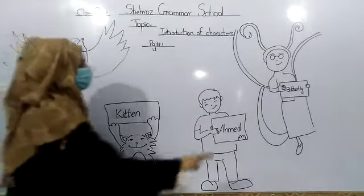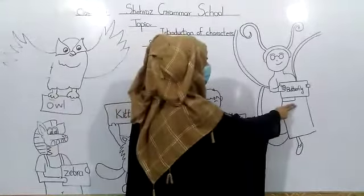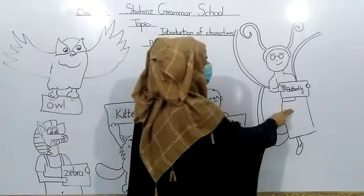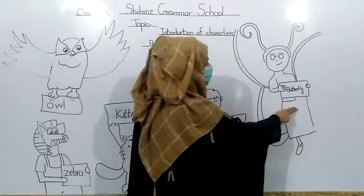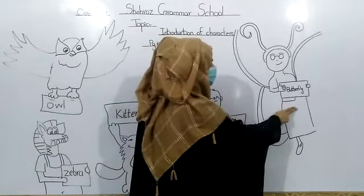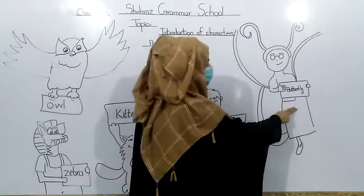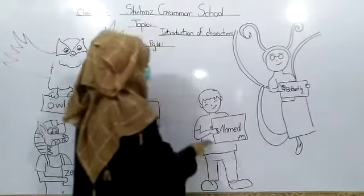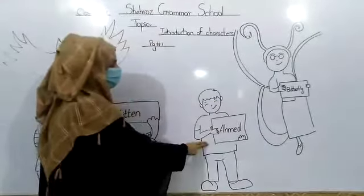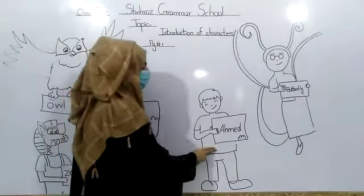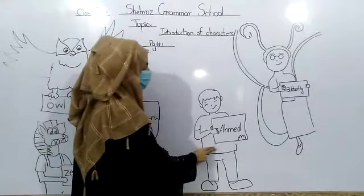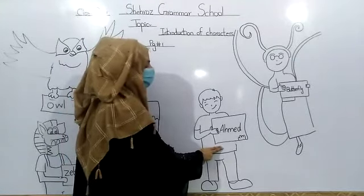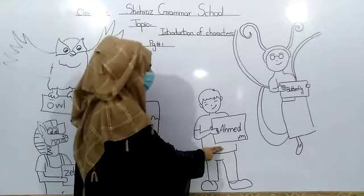This is Butterfly. Butterfly. Butterfly. Butterfly. What is this? Butterfly. And this is Animal. Animal. Animal. Animal. What is this?